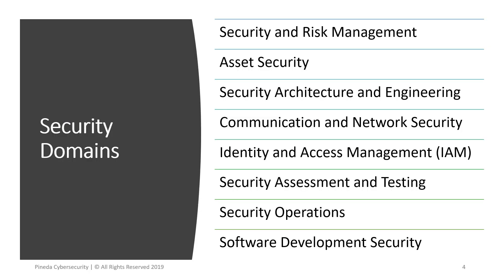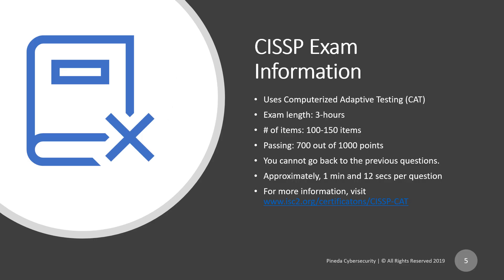For the coverage of the CISSP, we have eight domains: Security and Risk Management, Asset Security, Security Architecture and Engineering, Communication and Network Security, Identity and Access Management, Security Assessment and Testing, Security Operations, and Software Development Security.